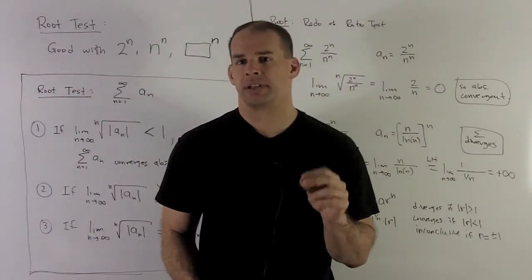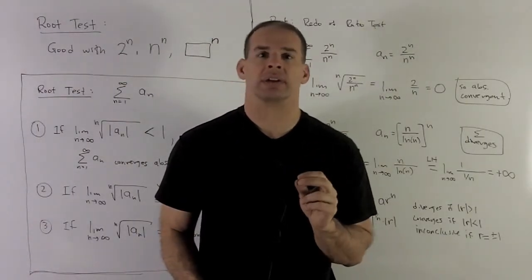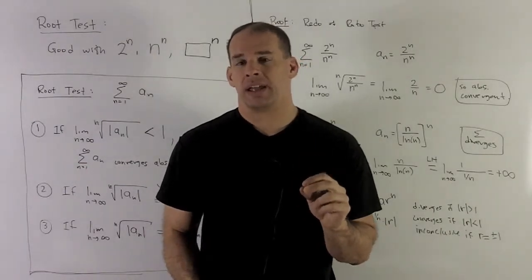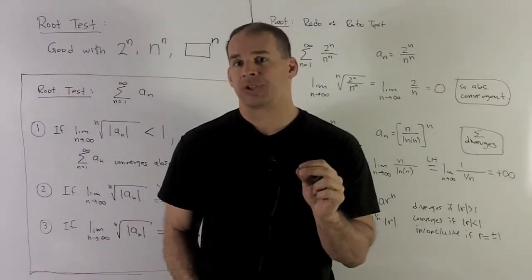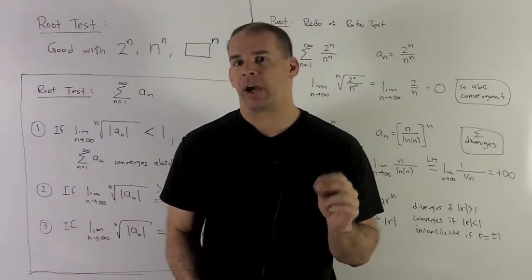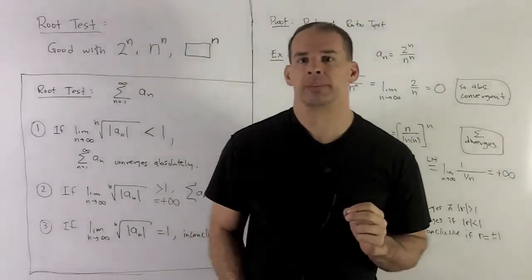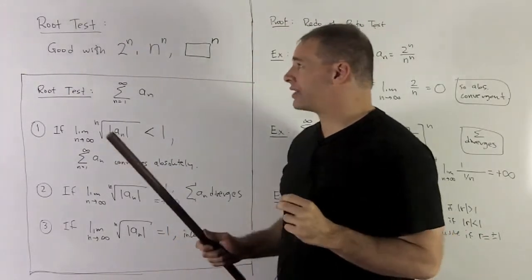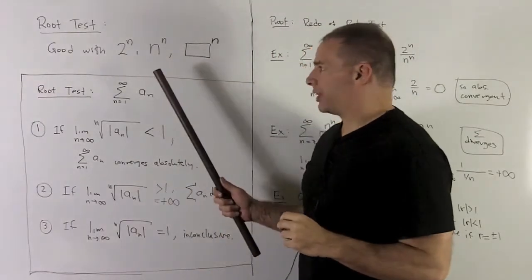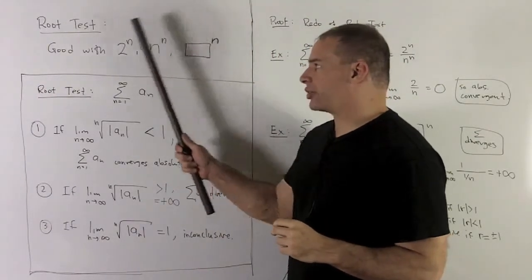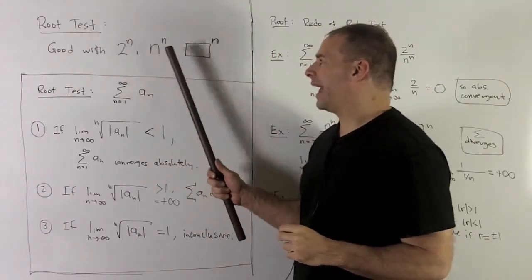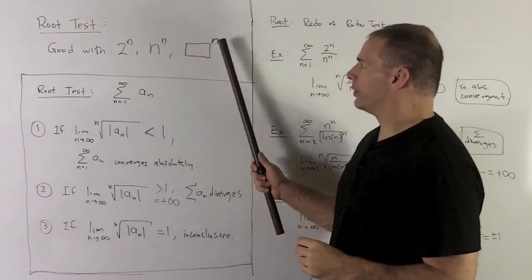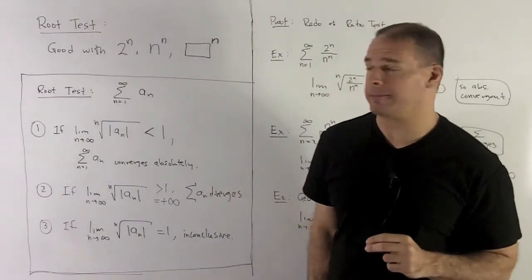Our final series test is the root test. The root test is a lot like the ratio test in that we get our answer by comparing with geometric series. The root test is going to work well with series that have factors like 2 to the n, n to the n, or just any expression with an exponent of n on top of it.